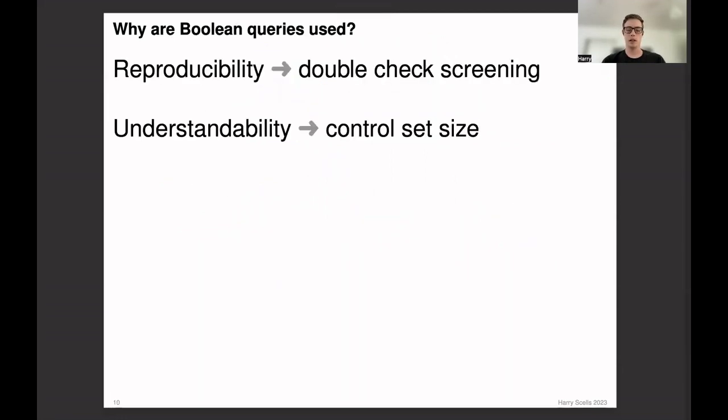But Boolean queries are really a necessary part of systematic review creation. They enable reproducibility so you can use them to double check the screening process to make sure that no studies have been left out. And they provide a level of understandability. The people that actually formulate these queries are often expert searchers, so they're able to really control the result set size through the Boolean query to an acceptable amount of studies based on a screening budget.